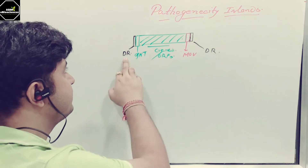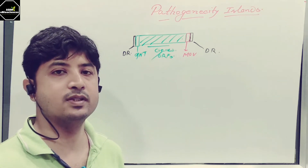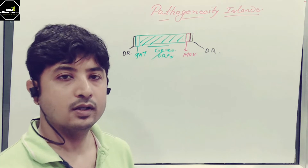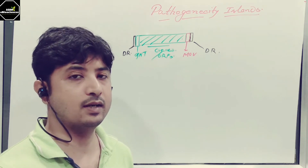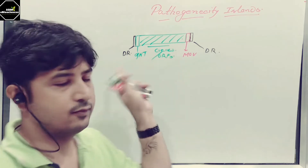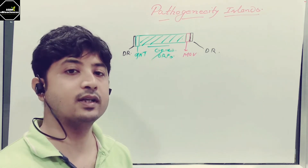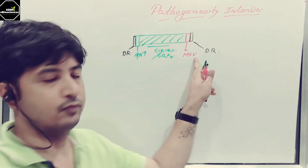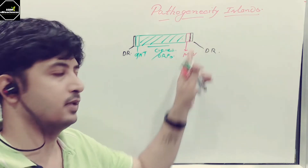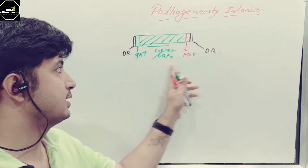It consists of direct repeats — DR means direct repeats. Then there is the integrase gene; the function of this integrase gene is to integrate foreign DNA into the genome of the host bacteria. It also carries the genes or ORFs present inside that island — the actual characteristic genes of the island — and then MOB genes which are responsible for the mobilization of these Pathogenicity Islands, and again direct repeats. Direct repeats are present on both sides of the Pathogenicity Island, and inside that these different genes are available.